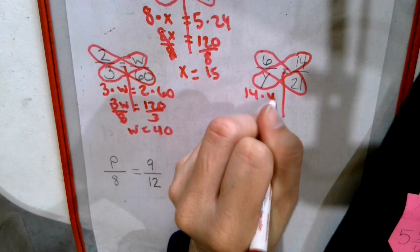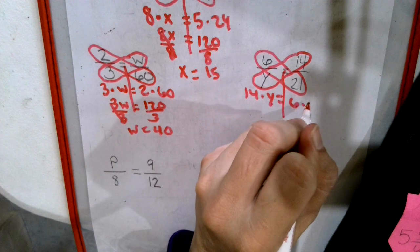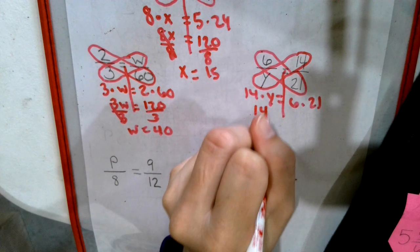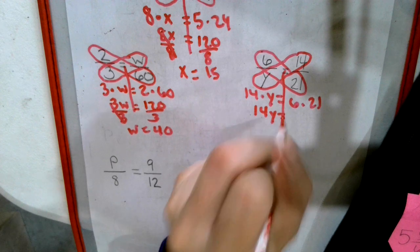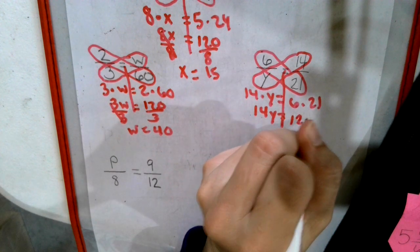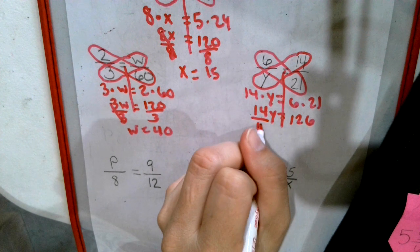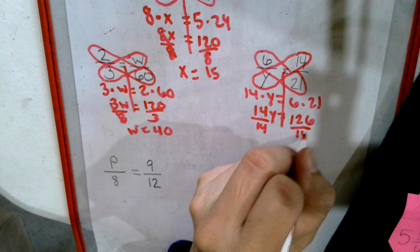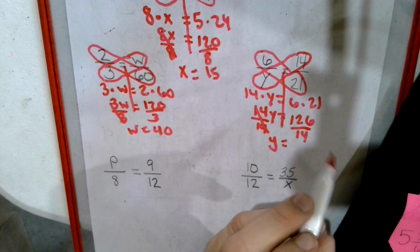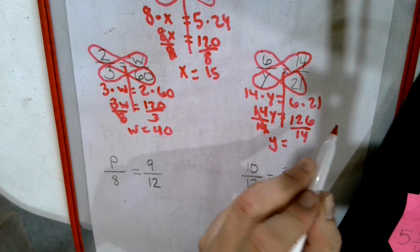14 times Y equals 6 times 21. Number and letter shoved together. We do the math on this. Divide by 14. Y equals, and we start picking numbers.